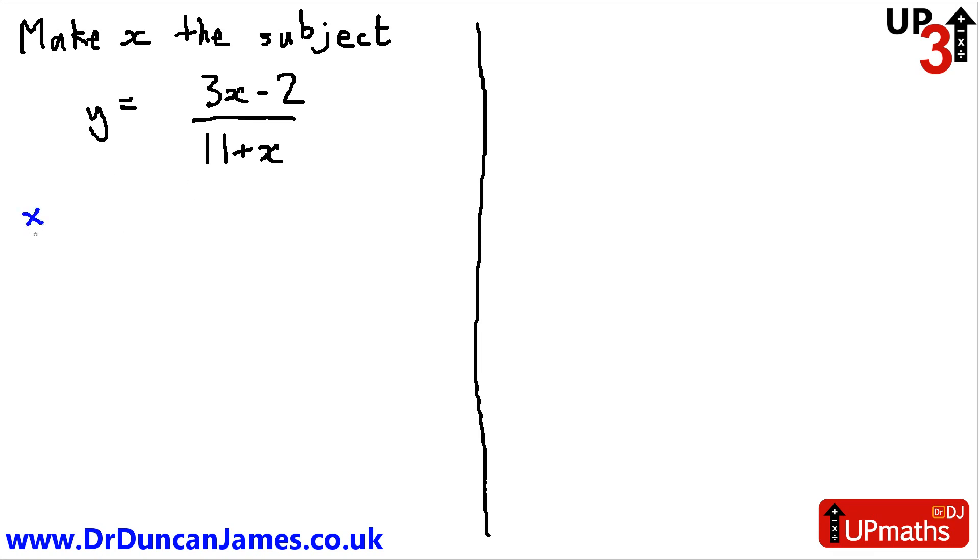Okay, so we need to get x on its own. Let's get rid of the fraction first, because much like when we're solving things, it's handy to get rid of the fractions—they just kind of get in the way. So y times 11 plus x equals 3x minus 2.